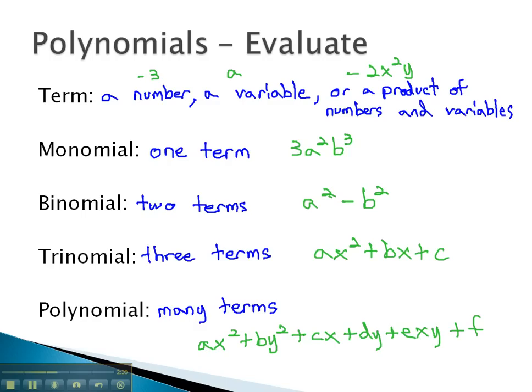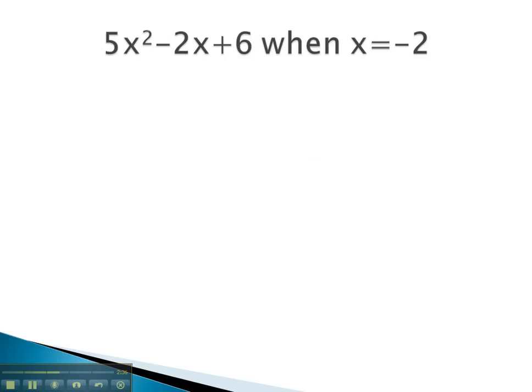Let's take a look at some polynomials and how we can evaluate them when we know the value of our variables. In this expression, we know that x is equal to negative 2. This means we will replace each x with a negative 2. 5 times x, or negative 2 squared, minus 2 times negative 2, plus 6.